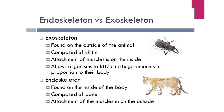Now what is the difference between exoskeleton and endoskeleton? First we will discuss exoskeleton. Exo means outside — it is found on the outside of the animal. Look at this picture. Exoskeletons are usually found in insects. It is made up of chitin, which is a protein. The attachment of muscles is on the inside — their muscles are attached to the inside of the skeleton. This allows organisms to lift and jump huge amounts in proportion to their body. Importantly, insects can shed their exoskeleton so that they can grow, and then the new exoskeleton reappears on them.